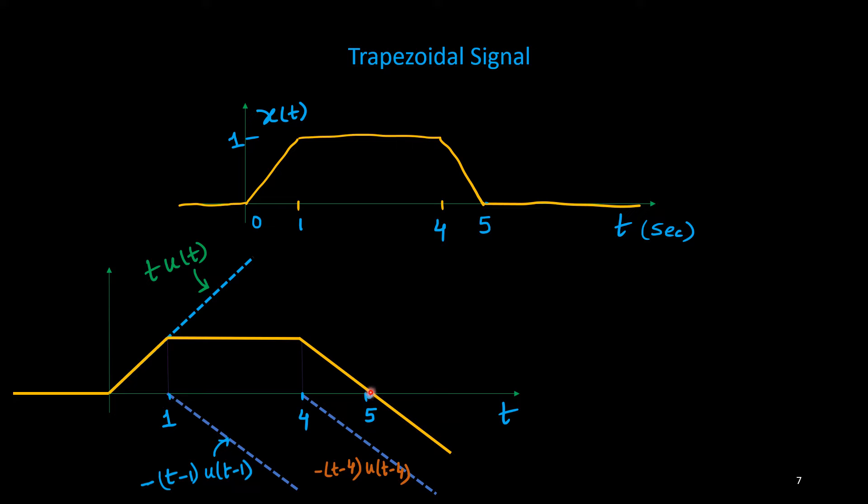So I need to include one positive slope because it is continuing on negative slope. I have to add one positive slope here, so that signal I can write as delayed by 5 seconds: (t-5)·u(t-5).